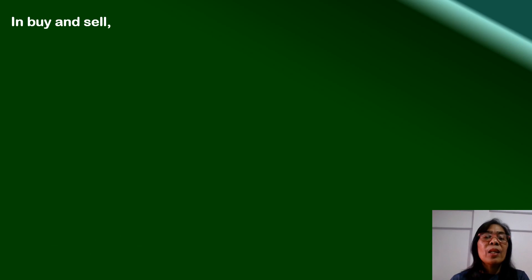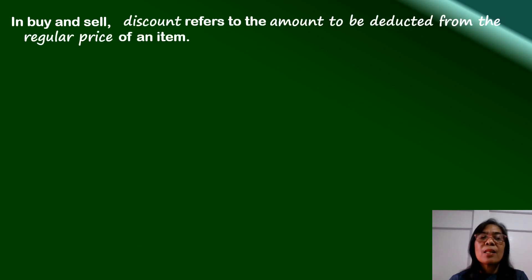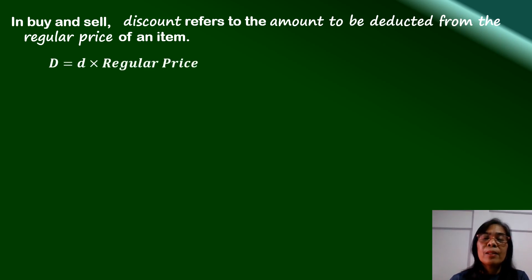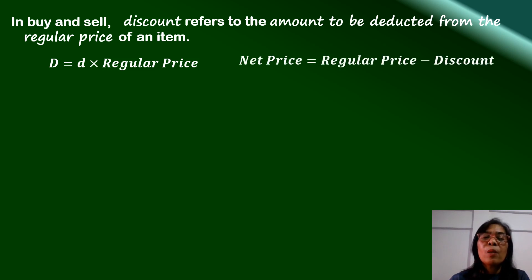Discount is very familiar to us because we often see this term when we buy items in a department store. In buy and sell, discount refers to the amount to be deducted from the regular price of an item, and it is determined using the formula: the discount rate times the regular price. The amount you are going to pay for that discounted item will be equal to the regular price less the discount.